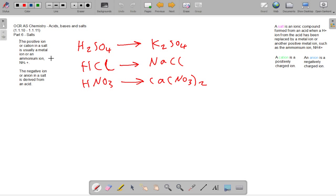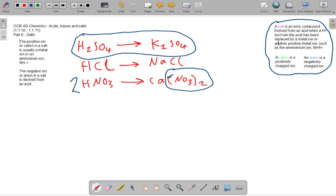Moving on to how they form salts. Sulfuric acid forms salts like potassium sulfate. For hydrochloric acid, if I added sodium to it, it would make sodium chloride. For nitric acid, I would have two moles to make two of these nitrate groups. NO3 is nitrate, so you need two of them. The definition is: a salt is an ionic compound formed from an acid when a H plus ion from the acid has been replaced by a metal ion or another positive metal ion such as the ammonium ion NH4 plus. A cation is positively charged, anion is negatively charged.